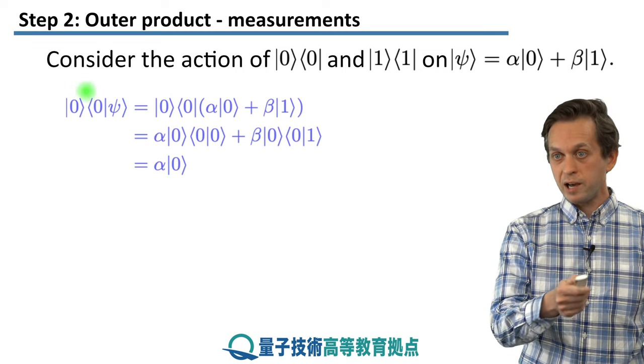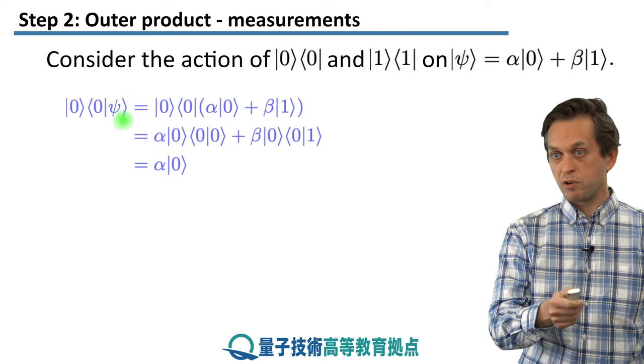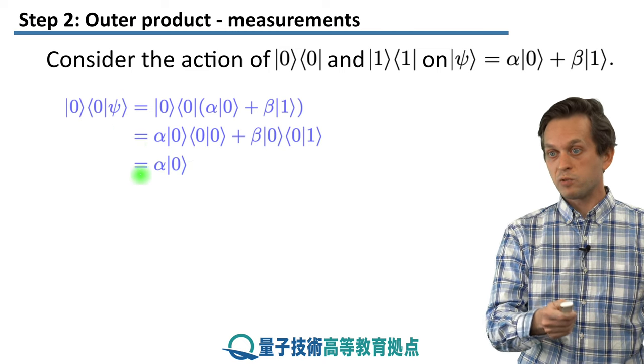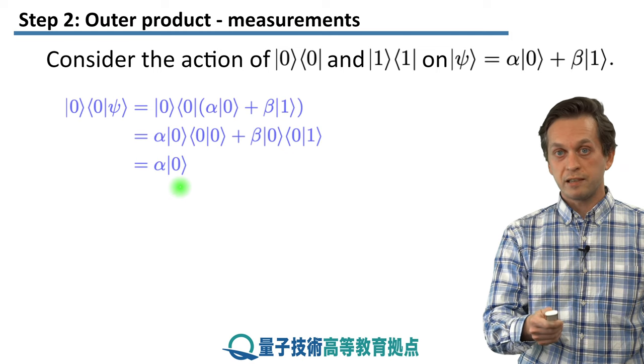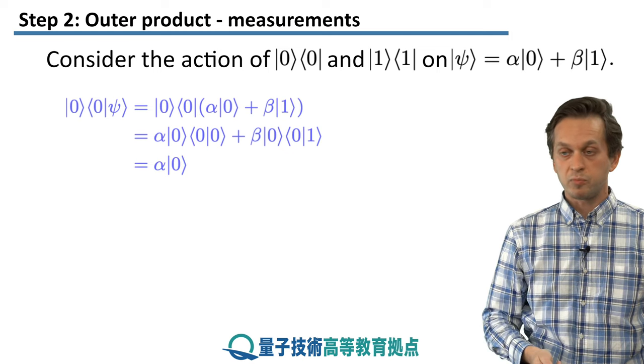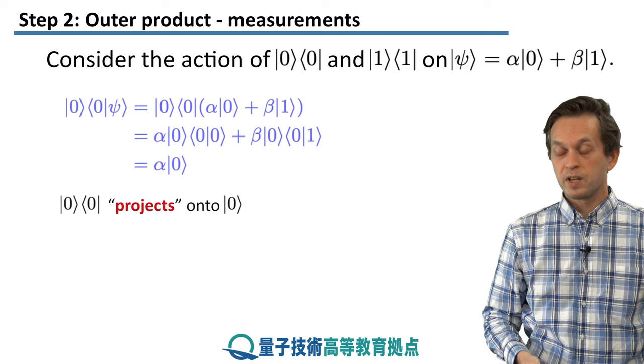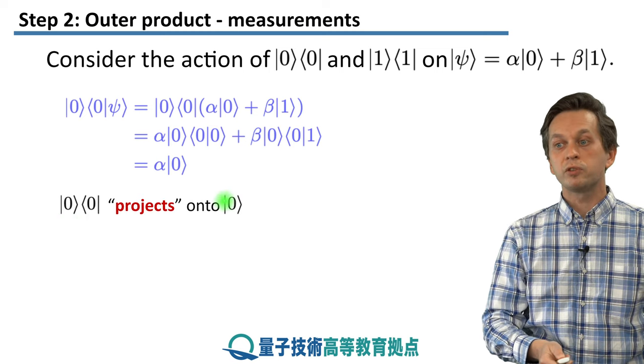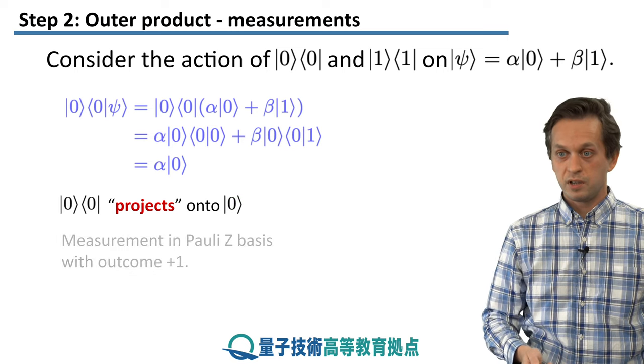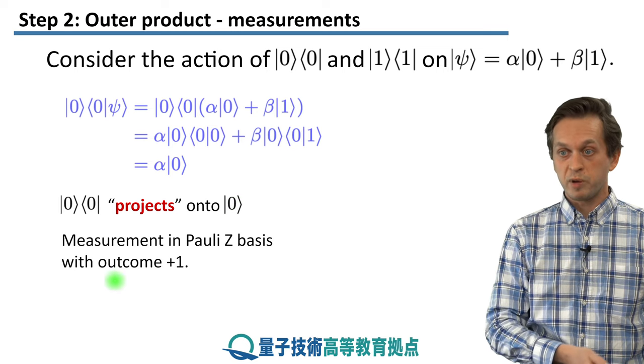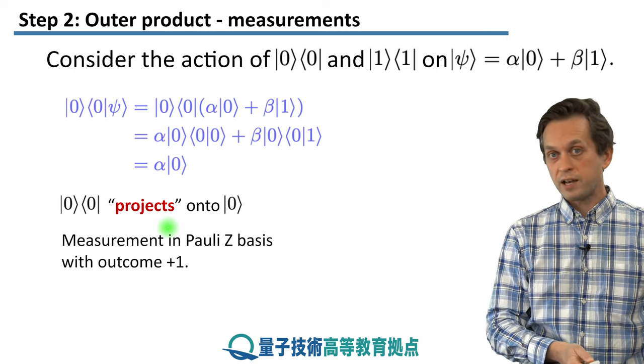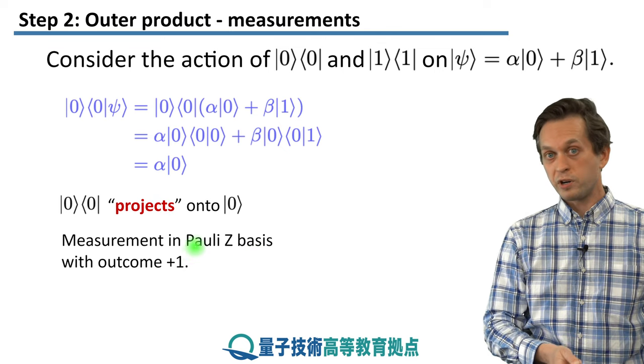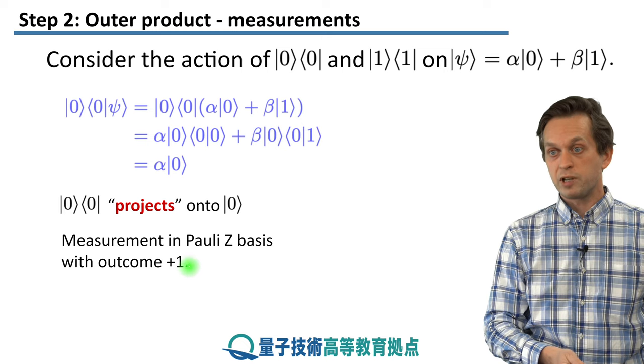So we see that by applying this outer product 00 onto our general state psi, we have changed it such that it's now just the ket of 0 multiplied by some complex factor. So we say that the outer product 00 projects onto the state of 0. If you remember from previous lesson, this in fact gives us the effect of a measurement in the Pauli-Z basis, where the outcome of the measurement is plus 1.